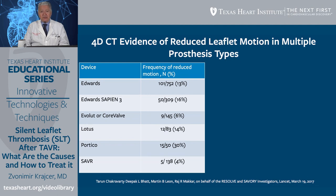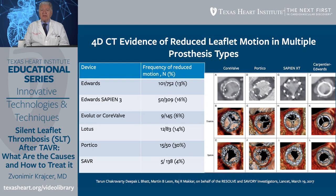SAVR has a significantly lower incidence of subclinical leaflet thrombosis, in the range of 3% to 4%. CT images show the appearance of thrombosis in the leaflets across various prosthesis types. The most pronounced abnormality is during systole where leaflet excursion is limited, affecting one, two, or all three leaflets. Therefore, silent leaflet thrombosis can present with a variety of severities from very mild to severe complete valve thrombosis.